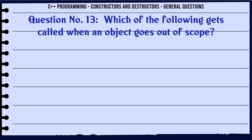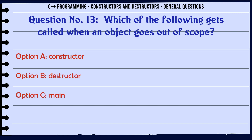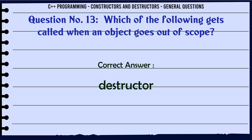Which of the following gets called when an object goes out of scope? A. Constructor. B. Destructor. C. Main. D. Virtual function. The correct answer is Destructor.